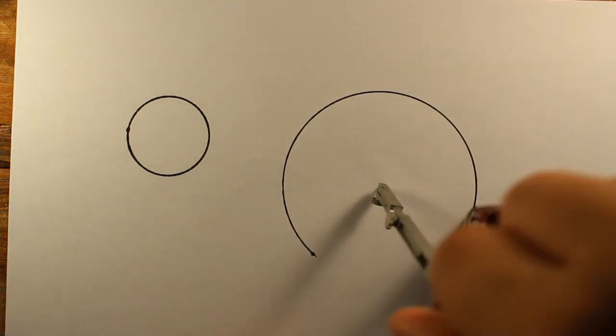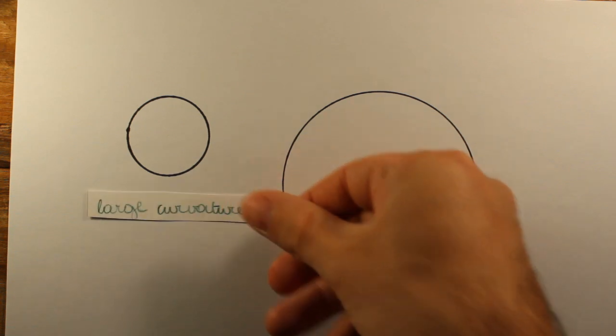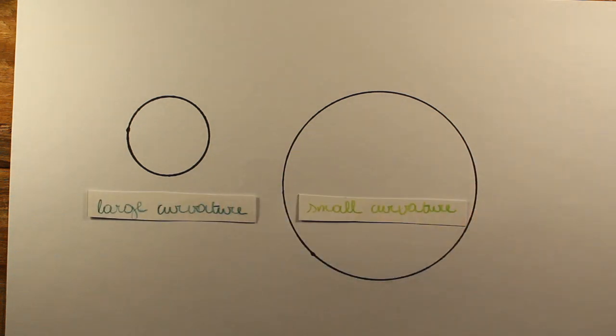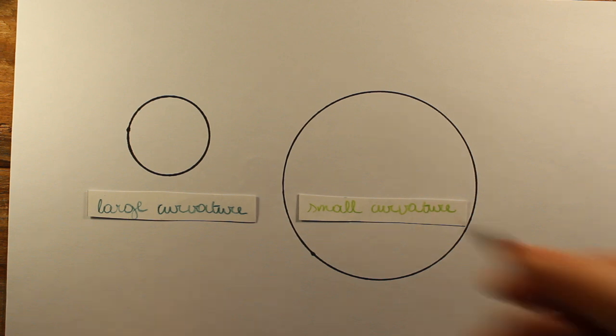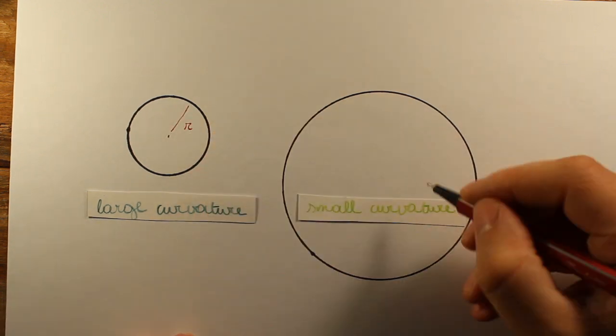Now on to the big question. How do we define curvature? Let's start off with the simplest curved shapes, circles. I hope you'd agree with me that this circle has larger curvature than this one. After all, they both curve 360 degrees, but a small circle does it over a smaller distance. In other words, small circles have large curvature, and large circles have small curvature.